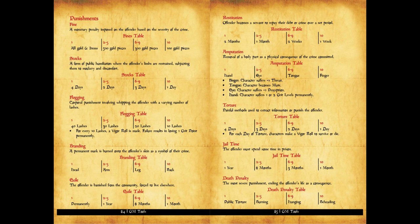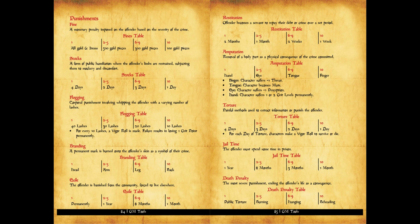Then you have amputation — you lose some body parts. You can combine that with physical attribute penalties like strength. You can lose a hand, an eye, a tongue, or a finger — very heavy for your character. Then there's torture, even worse — this is becoming a living hell. You can be tortured for days, and for each day of torture you must make a roll to survive. Then you've got jail time, which just changes the duration. And of course, you get a death penalty — but with style. You can roll: a one means public torture and death, then burning, hanging, or beheading. You get the whole starter pack of medieval life.